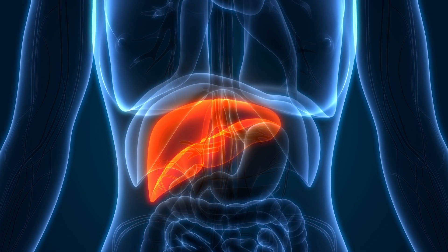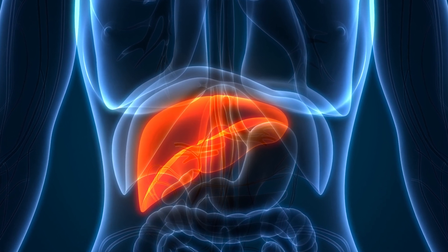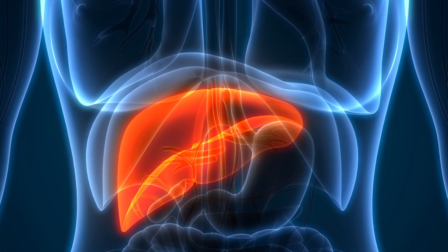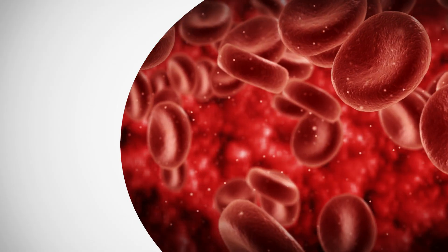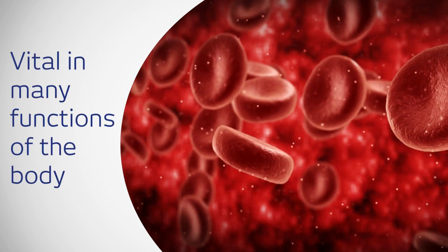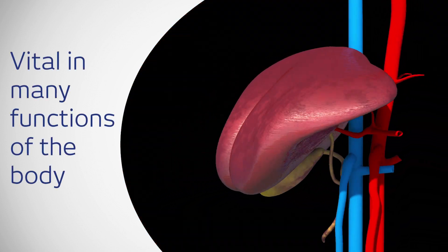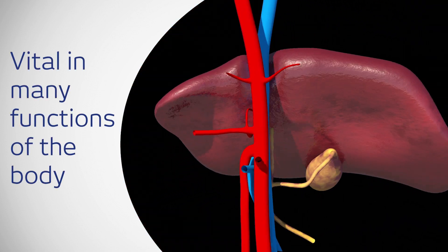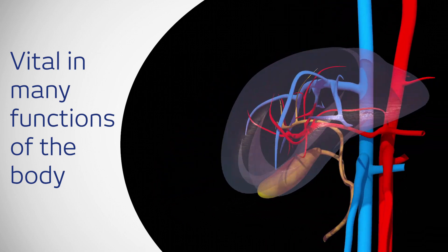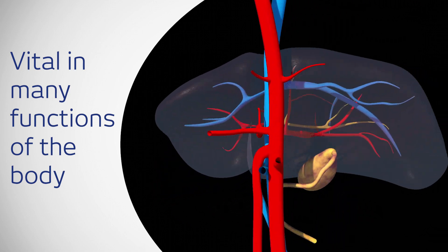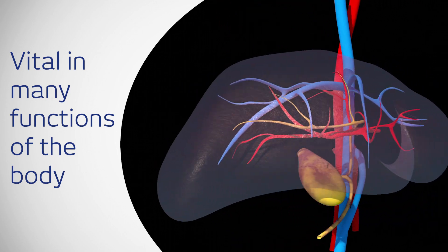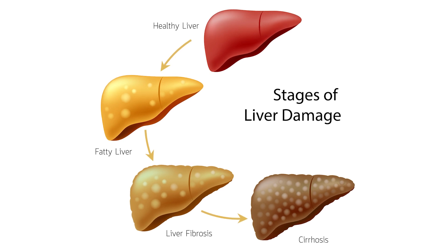The liver is known for its ability to break down and eliminate toxins from the body. It is also vital in producing blood proteins, regulating blood clotting, manufacturing immune factors, secreting bile, and storing vitamins and minerals.